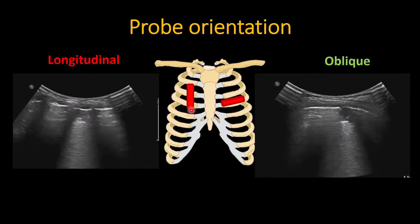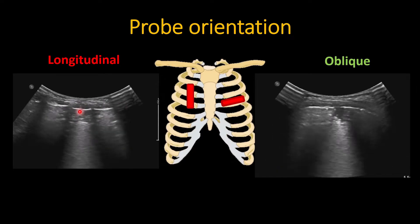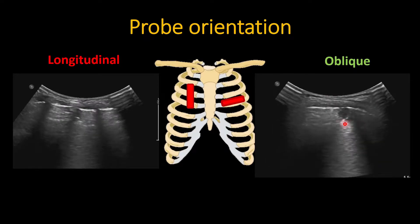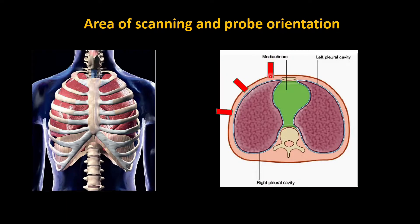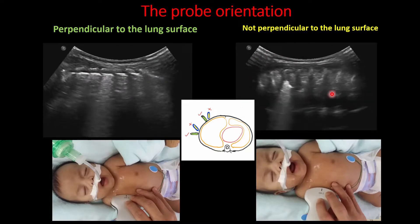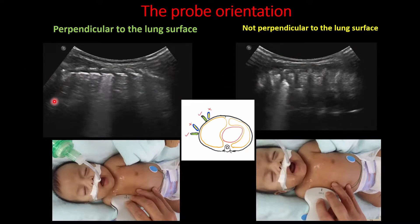In terms of probe orientation, you can perform a longitudinal image by placing the probe sagittally — this shows rib shadowing and any lesions present. You can also perform an oblique scan, where you do not have the ribs obscuring your view and can see the lung much better. It is important that the probe be placed perpendicular to the lung surface. If it is not perpendicular, you may find apparent abnormalities compared to a relatively normal appearance when correctly oriented.